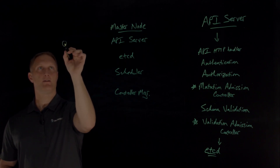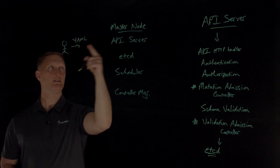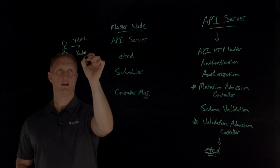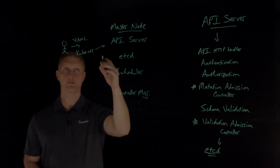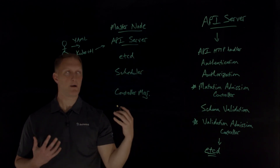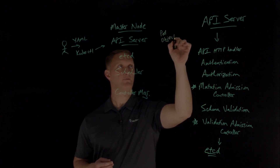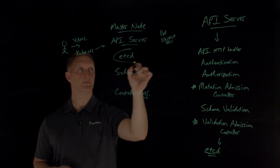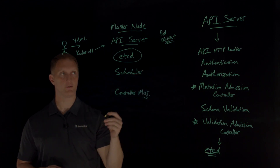As a user, I'm going to send a YAML file into the API server via a kubectl command. The request goes to the API server. As soon as the API server receives this, it creates a pod object — because everything in Kubernetes is an API object — and then it updates etcd with the new pod object. So now etcd has this new pod object loaded in it.